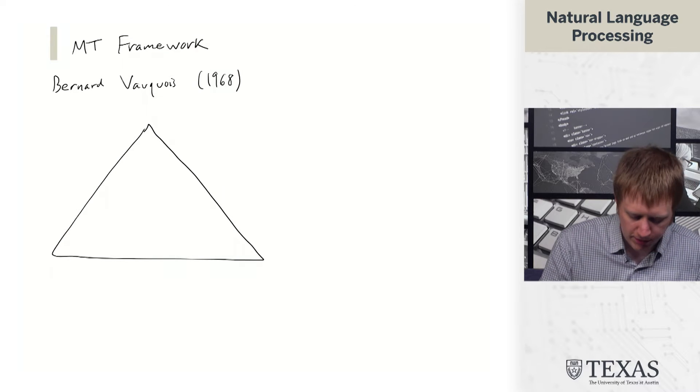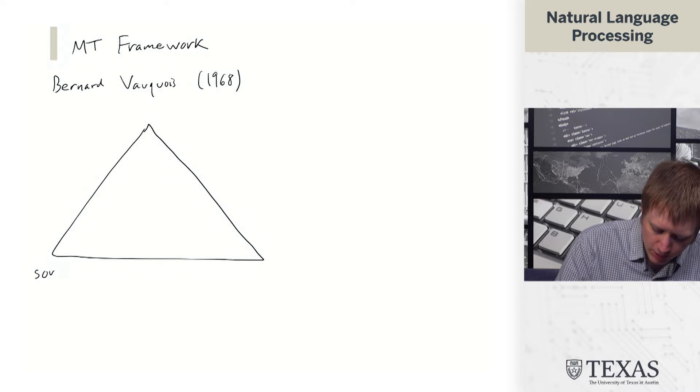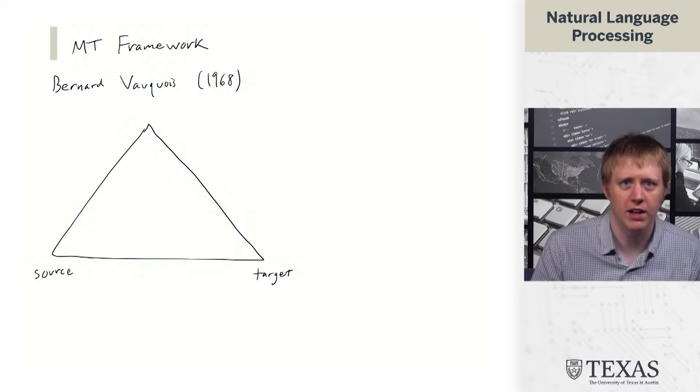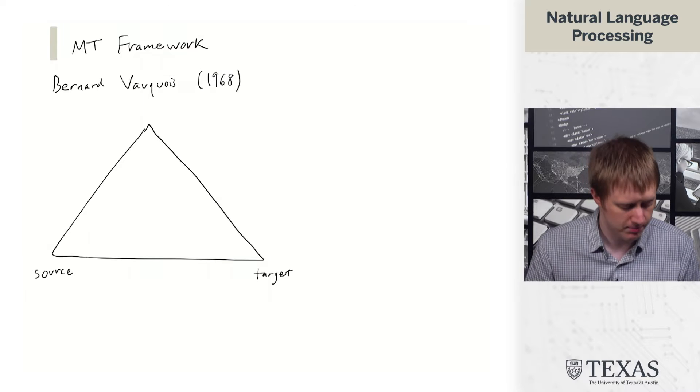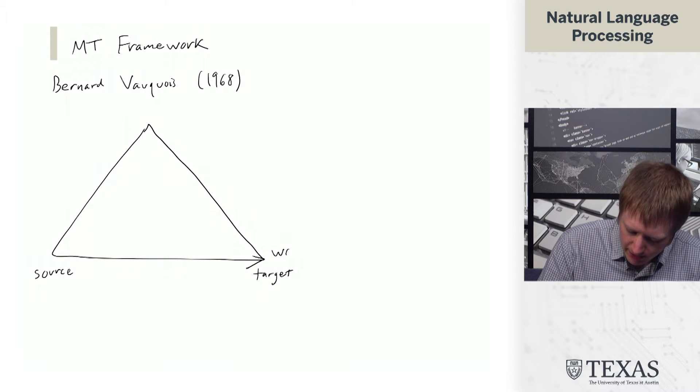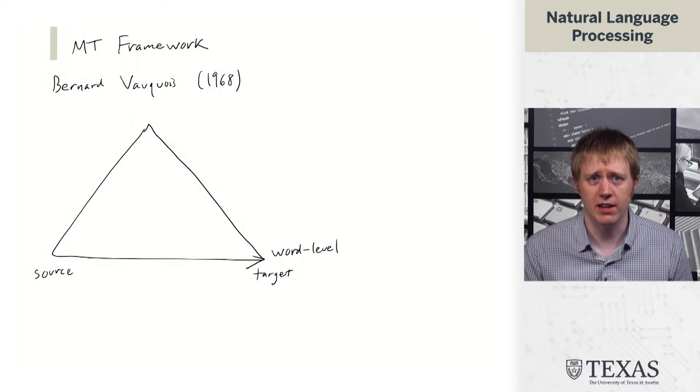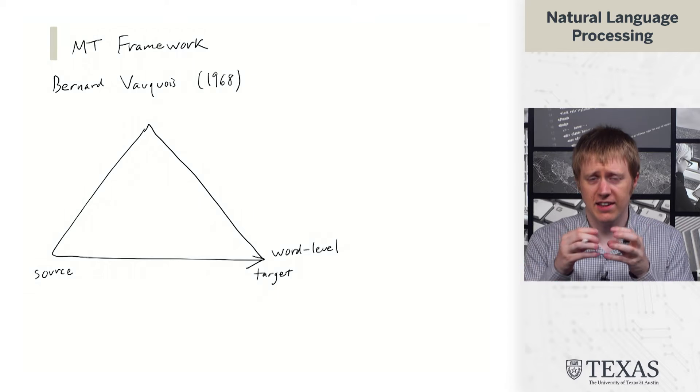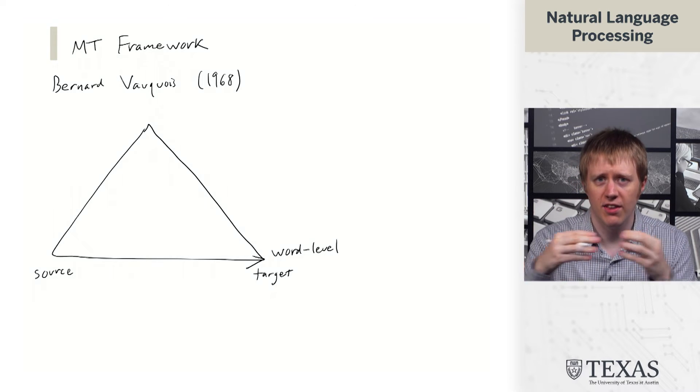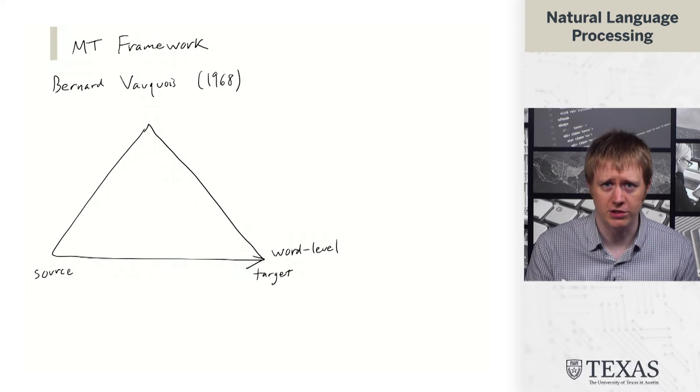So the idea is roughly the following. We have a source sentence over here and a target sentence over here, more or less represented as strings of words. We could think about a kind of word-level method for translating between these two things. That's the closest to the surface structure of these sentences, the lowest level form of translation we can think of.